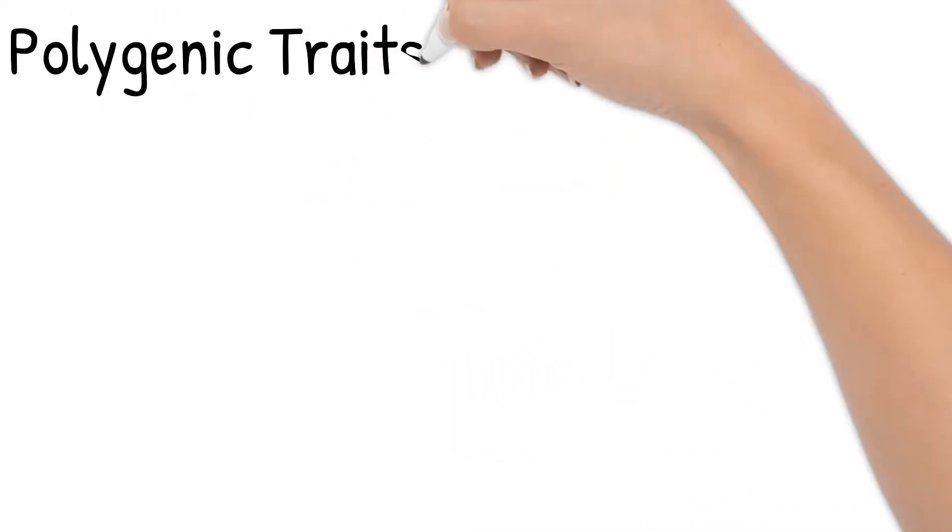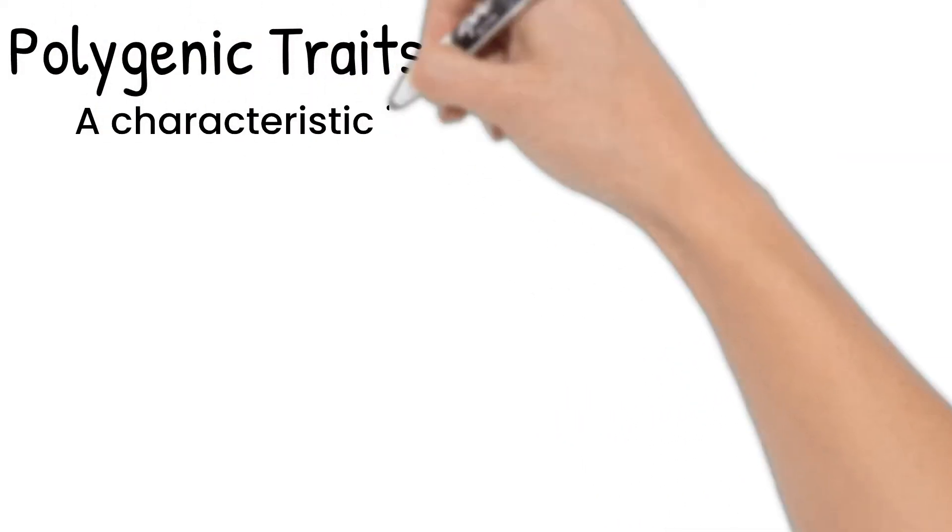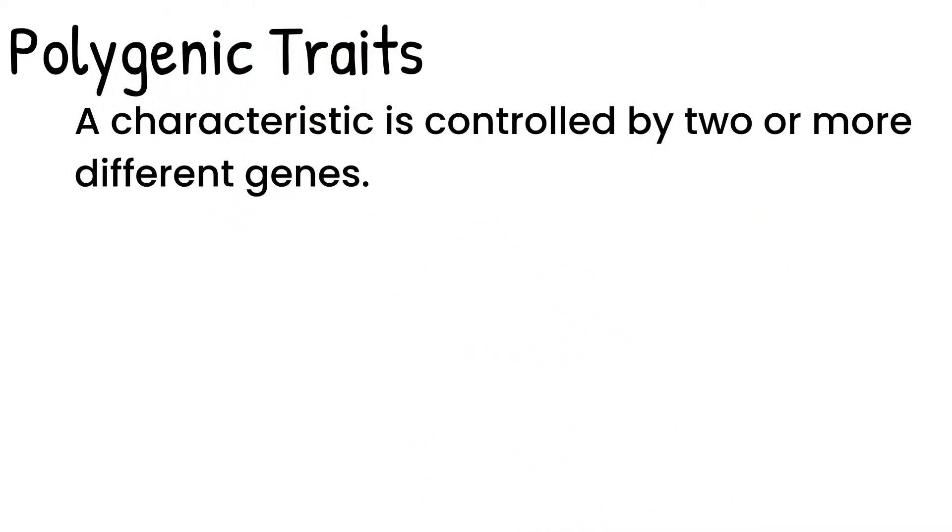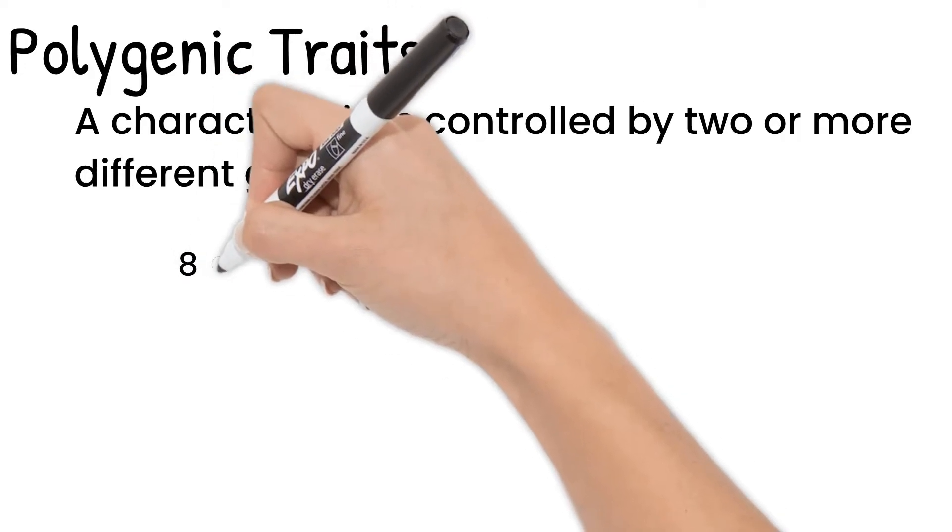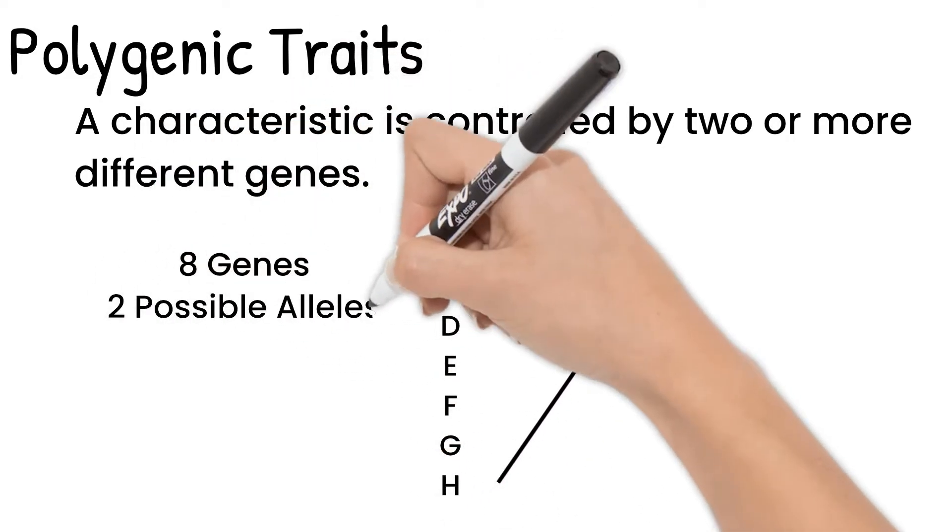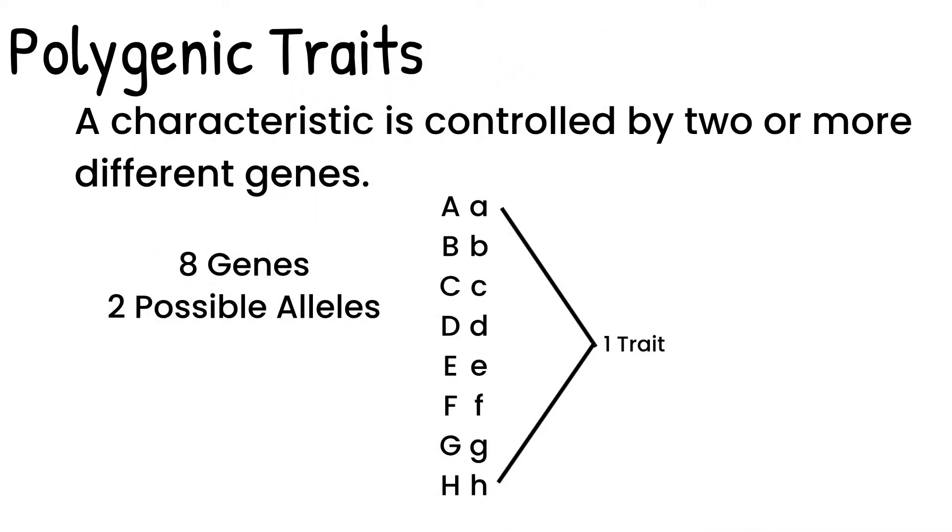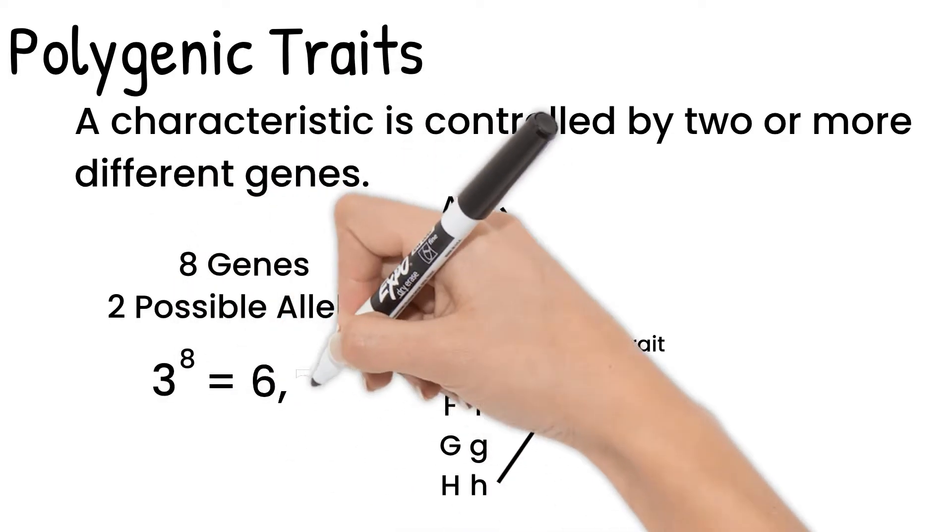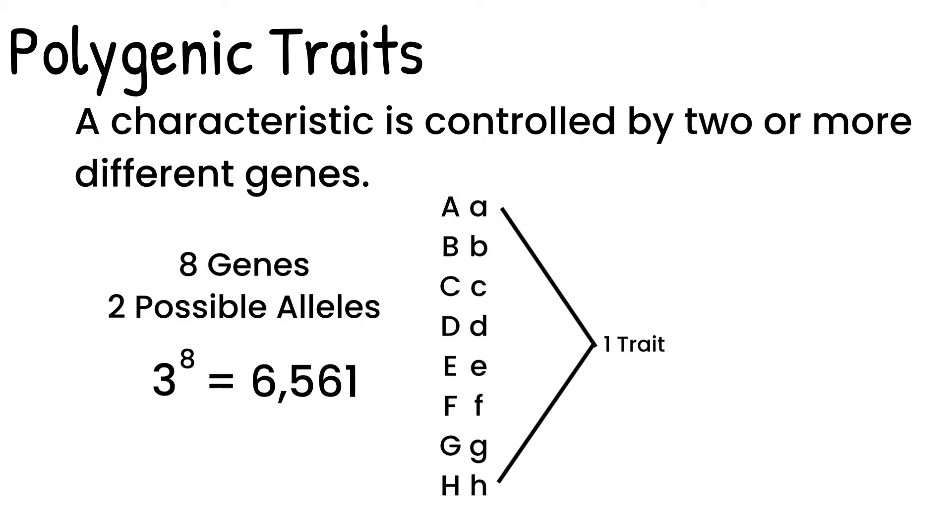Polygenic traits are when a characteristic is controlled by two or more different genes. The different genes interact to create many possible phenotypes. Say there are eight separate genes that all control the same trait. All eight have two possible alleles, a dominant and a recessive. There are 6,561 possible genotypes for this one characteristic.